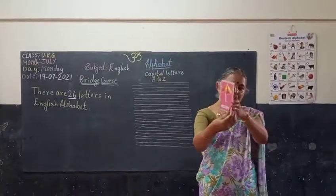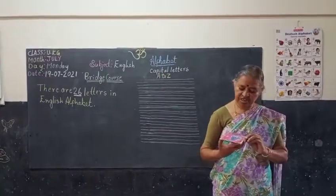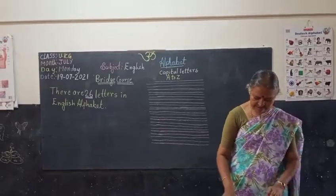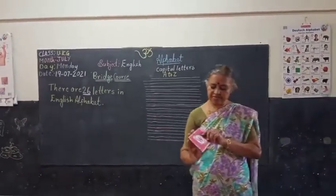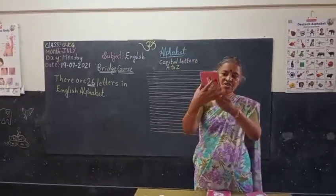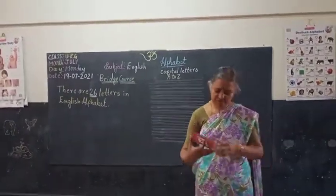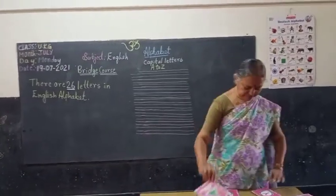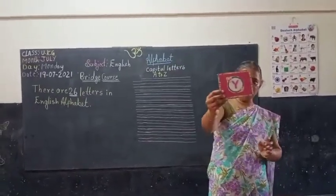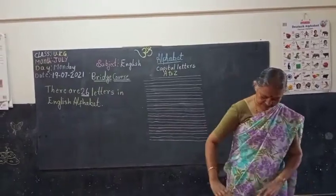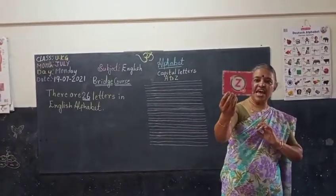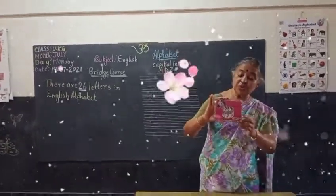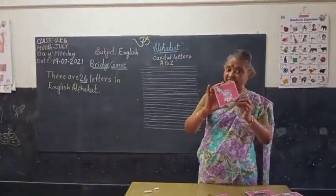U for umbrella. V for van. W for woman. X for... X with a tree. Y for yak. And the last one — Z for zebra. We have studied 26 letters of the alphabet.